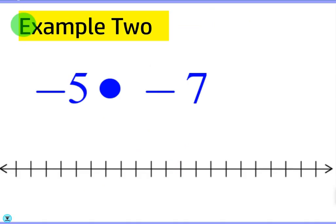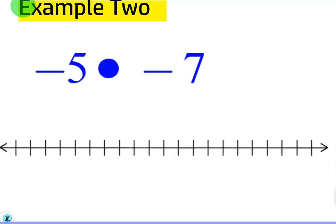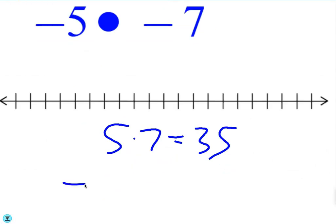Let's do a couple more. Negative 5 times negative 7. Well we know that 5 times 7 is equal to 35, right? Okay, and since the negative times a negative is a positive, that just concludes that negative 5 times negative 7 is also 35.